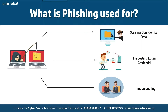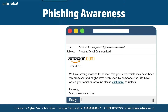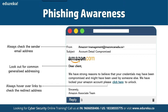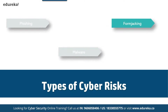Here is a phishing awareness example. This email appears to come from Amazon — it shows the Amazon logo and says Amazon in the subject — but if you look carefully, the sender address reads 'amazon management at amazon canada.com' where the letter 'a' is missing. In a hurry you might not notice. To protect yourself, always check the sender's email address, look for generic addressing, and hover over links to check the redirect address before clicking.